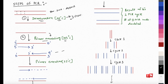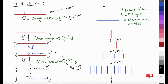Once the primer is bound, the third step is primer extension. We increase the temperature to 72 degrees centigrade, which is the optimum temperature for Taq polymerase to carry out polymerization. Taq polymerase comes and starts adding nucleotides at the 3' OH end of the primer on both strands, synthesizing new strands in the 5' to 3' direction.